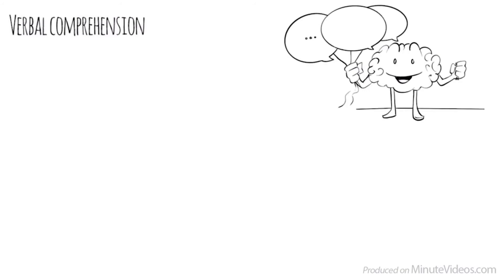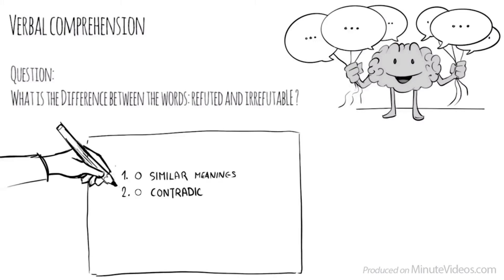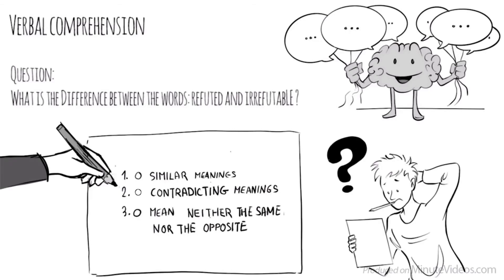The third section was verbal comprehension, which measures our ability to access vocabulary, express ourselves in a meaningful manner, and apply reasoning skills to information presented verbally. In the first question, it said, What is the difference between the words refuted and irrefutable? Do they have similar meanings, have contradicting meanings, or mean neither the same nor the opposite? They must have contradicting meanings.